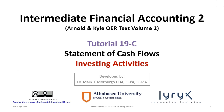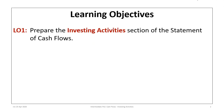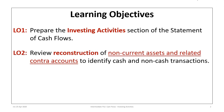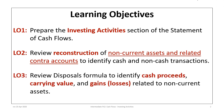Welcome to Financial Accounting Tutorial 19c, the third in a series focused on preparation of the statement of cash flows. This tutorial covers preparation of the investing activity section. There are three learning objectives: prepare the investing section of the statement of cash flows, review reconstruction of non-current asset and related contra accounts to identify cash and non-cash transactions, and review the disposals formula to identify cash proceeds, carrying value, and gains and losses related to long-term assets.